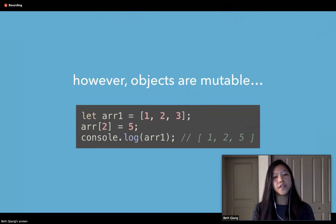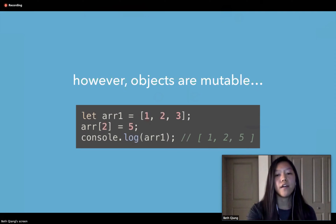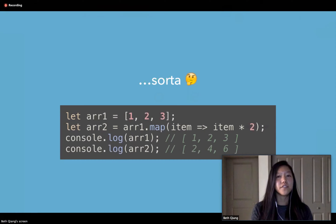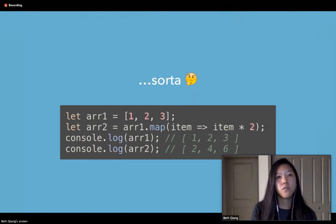However, unlike these primitives, objects are mutable in JavaScript. In our array below, we are changing just the last element, and when we console log the original array, we have the same array with the last element changed. One caveat is that objects in JavaScript do have methods that adhere to immutability — for example, the Array.prototype.map method will return a new array and leave the original unchanged.